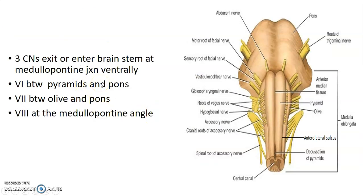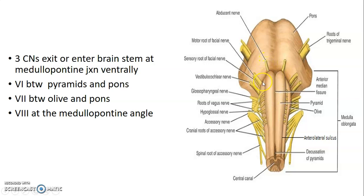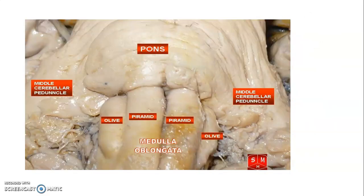Three cranial nerves exit and enter the brainstem at the medullary-pontine junction ventrally. Cranial nerve 6 (abducens) is located between the pons and pyramid. Between the pons and olives is cranial nerve 7 (facial nerve). At the cerebellopontine angle is cranial nerve 8, the vestibulocochlear nerve. So: between pyramids and pons — abducens; between pons and olives — facial nerve; laterally at the angle — vestibulocochlear nerve.